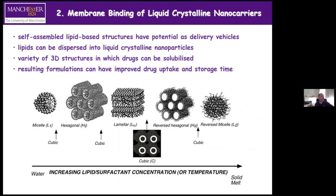Moving on to the second study: binding of liquid crystalline nanocarriers. Lipids will self-assemble into different structures according to the type of lipid, temperature, and various other parameters. Adding components to lipids can change the phase of the structures they self-assemble into. Lipids can form micelles, hexagonal phase, lamellar phase, cubic phase, reverse hexagonal, and reverse micelle — various types of structures that amphiphilic molecules can self-assemble into.